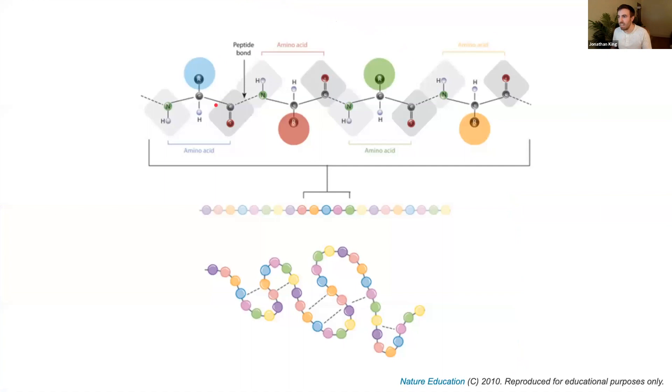The function that proteins play is actually entirely dependent on what their 3D shape is. Proteins are linear chains of amino acids. Each amino acid is differentiated by the kind of side chain that's attached to it. There are about 20 different amino acids and each of them with a unique side chain will fold together in 3D space to create a unique shape for that protein, which determines its complete function.